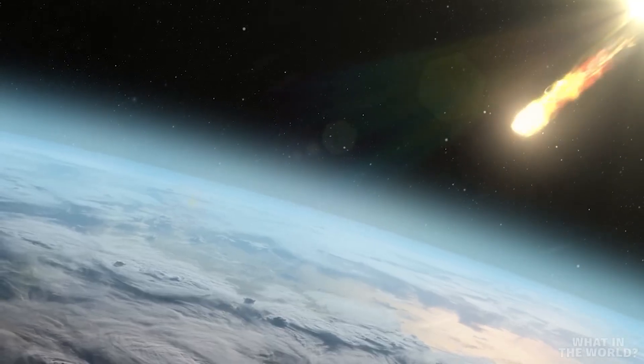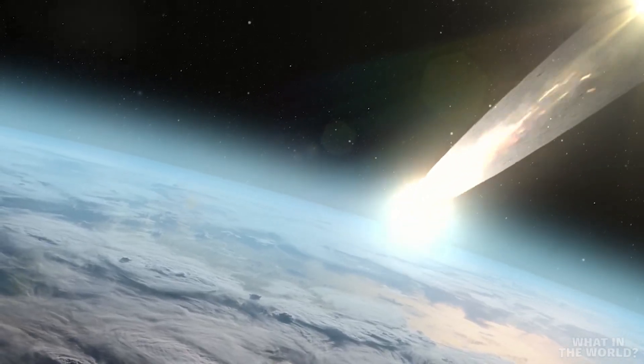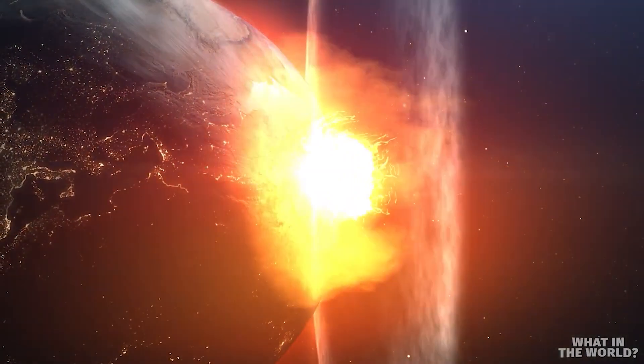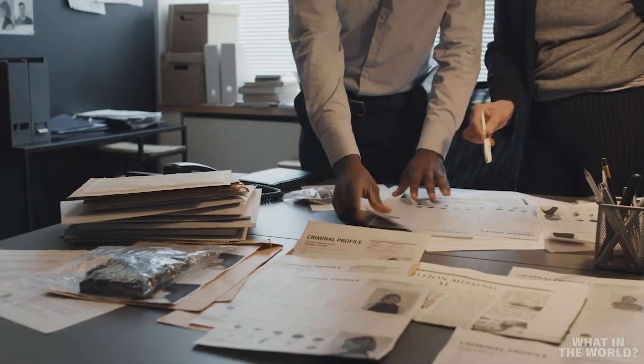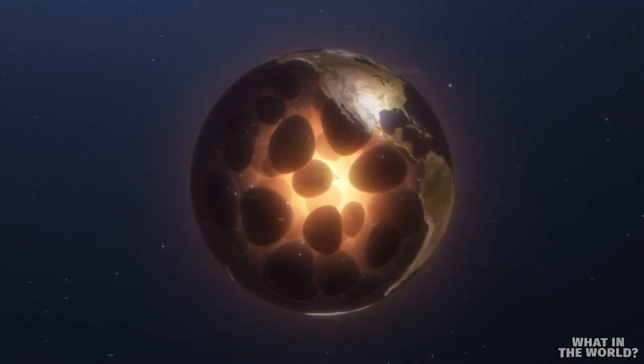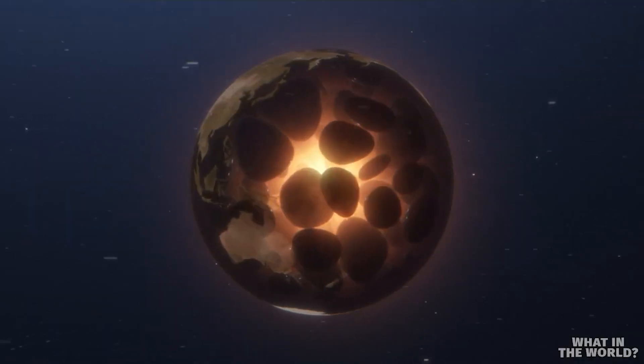This led scientists to believe our water formed farther out in the solar system, and that the objects carrying it, such as comets or asteroids, later crashed into a much cooler Earth, giving us our more delicate chemicals. This new, groundbreaking evidence suggests that the oceans gradually oozed out of the interior of the Earth.